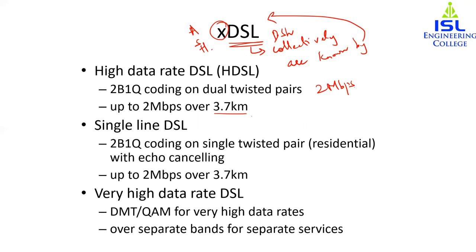Next is SDSL — Single Line Digital Subscriber Line — which is a replacement for HDSL. It is suitable for residential subscribers because HDSL required two twisted pair wires, while SDSL was developed using the same 2B1Q coding on a single twisted pair wire. It has the same 2 Mbps data rate and range of 3.7 kilometers.